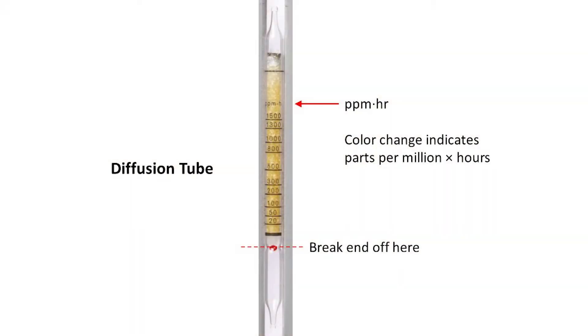A diffusion tube gathers information over two to ten hours in concentration time units of ppm hour or parts per million times hours. A scale is provided on the side of the tube for the direct reading.